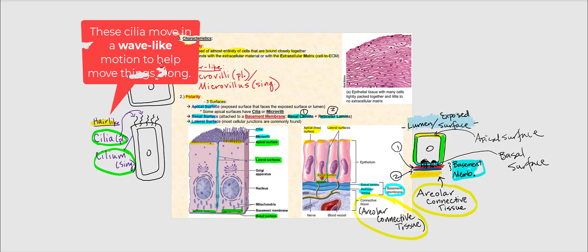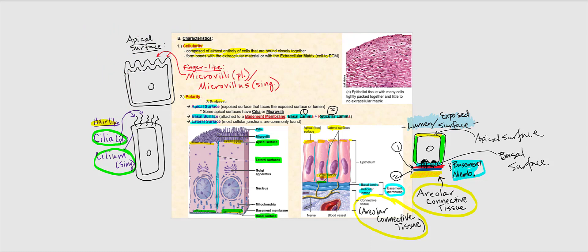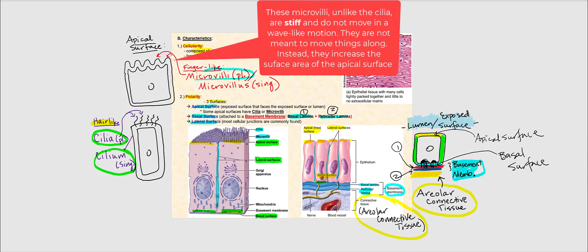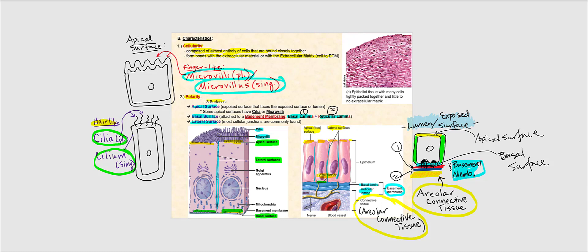Another apical structure found in some epithelial tissues is microvilli — finger-like projections. Microvillus is singular and microvilli is plural. Microvilli increase surface area, which is especially important in tissues involved in absorption. Some epithelial tissue will have neither cilia nor microvilli, depending on location and function.